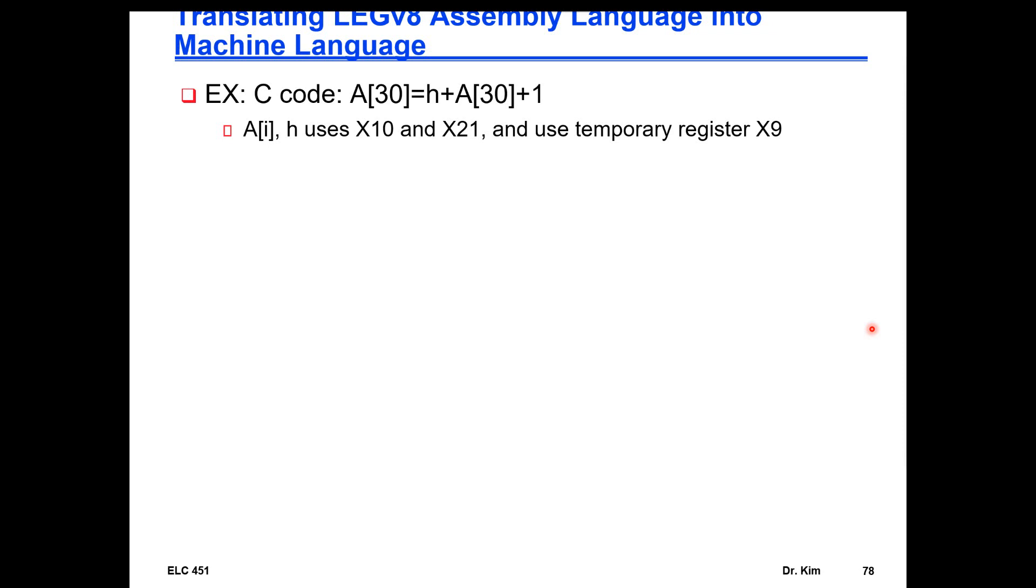So the last thing that we had discussed as we finished last time was the I-type format in the context of instruction formats. So I'm going to proceed today with an example of how C code could be used, or how the I-type instruction could be used to implement a line of C code, a statement of C code in an assembly level.